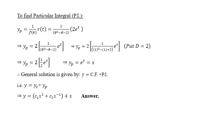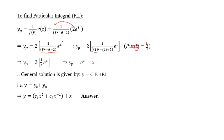For the particular integral, the formula is PI = 1/f(θ) · r(t). Here f(θ) = θ² − θ − 2 and r(t) = 2e^t. The constant 2 comes out, leaving 2 · 1/(θ² − θ − 2) · e^t. For exponential functions, we replace θ by the exponent value α = 1: denominator becomes 1 − 1 − 2 = −2. The 2 and −2 cancel, giving PI = e^t = x. So the general solution is y = c₁x² + c₂x^(−1) + x.